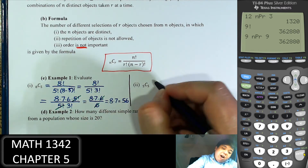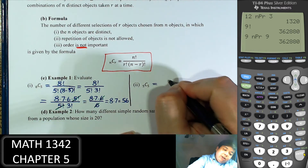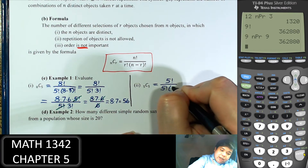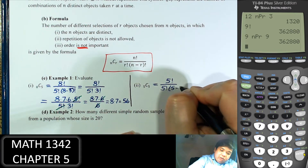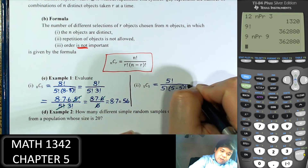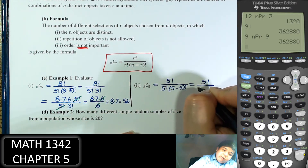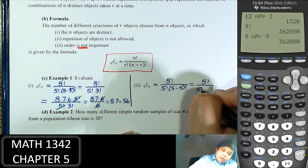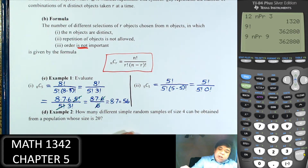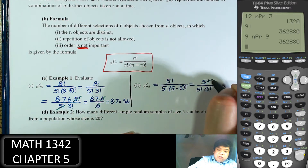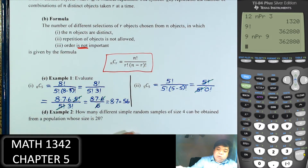For combination of 5 out of 5: 5 factorial over 5 factorial times (5 minus 5) factorial, which is 5 factorial over 5 factorial times 0 factorial. Since 0 factorial is 1, the factorials cancel, and that equals 1.